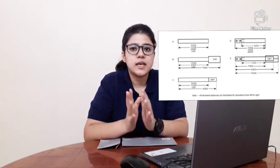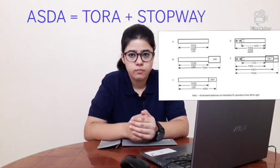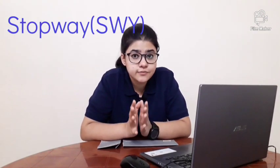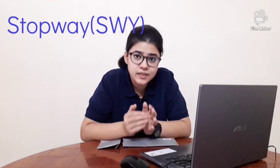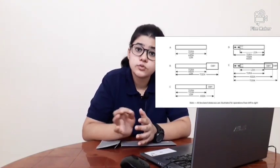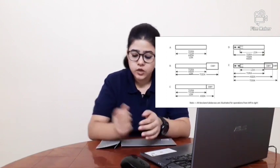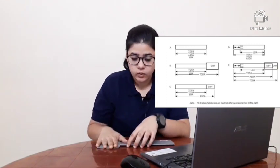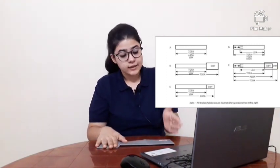The next declared distance is the Accelerate Stop Distance Available, or ASDA. It is the length of TORA plus the length of stopway. Stopway is a defined area on a land aerodrome — unlike clearway, which can be on land or water, stopway is only on land. Stopway is intended to stop an aircraft in case of an abandoned takeoff, and it is present at the end of TORA. Thus the length of TORA plus the length of stopway together comprise the Accelerate Stop Distance Available.